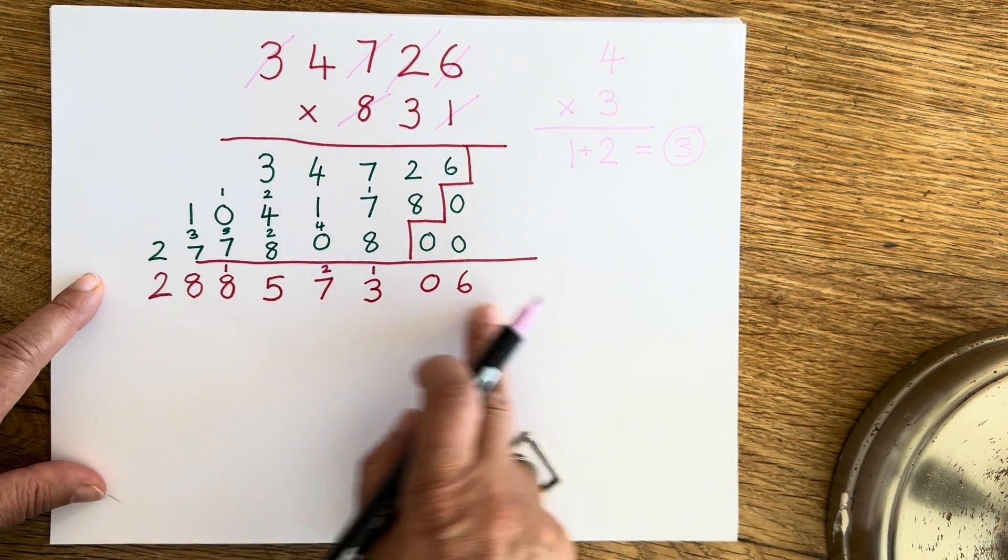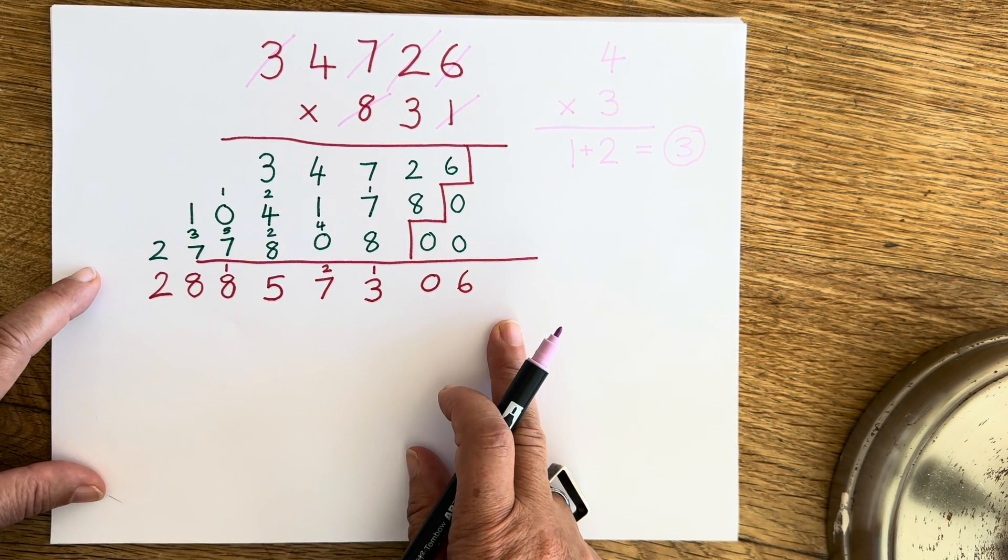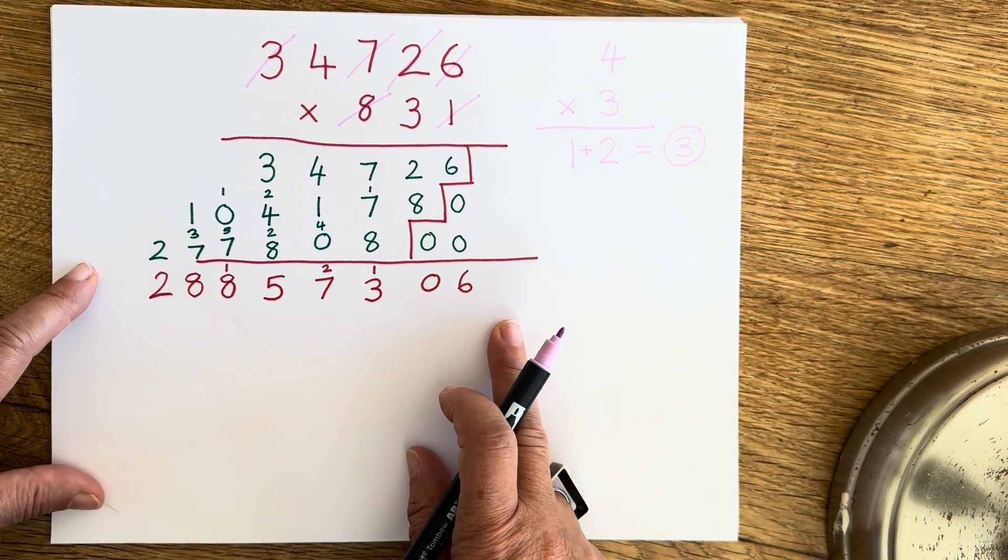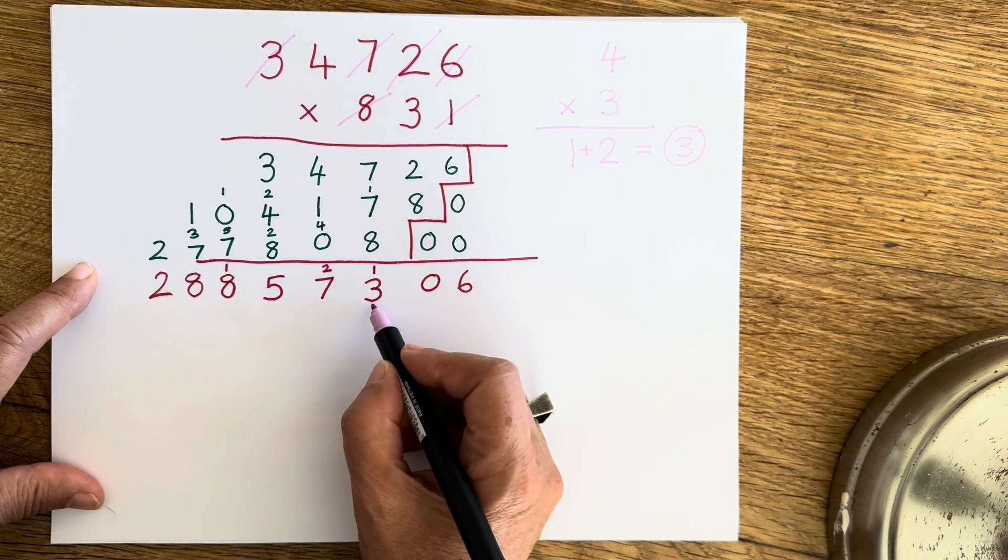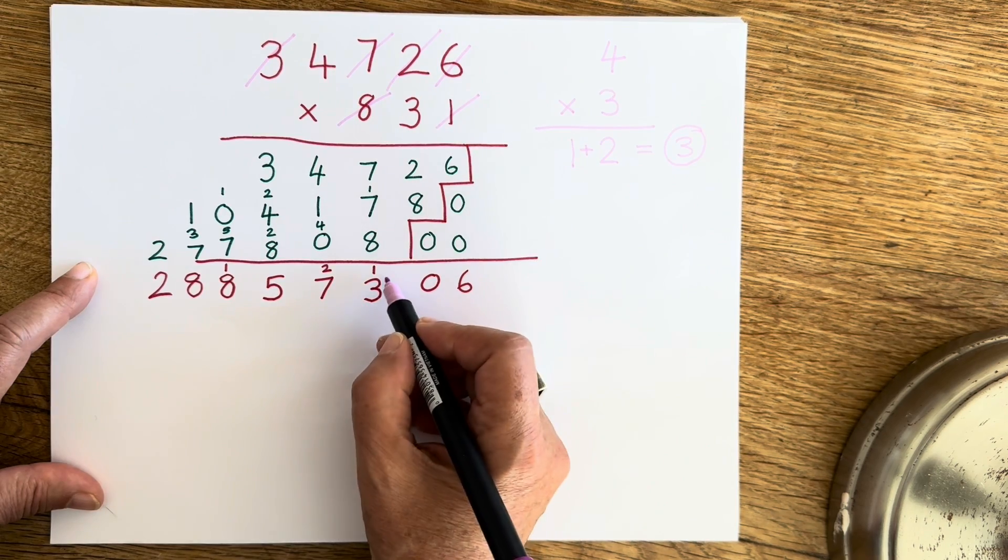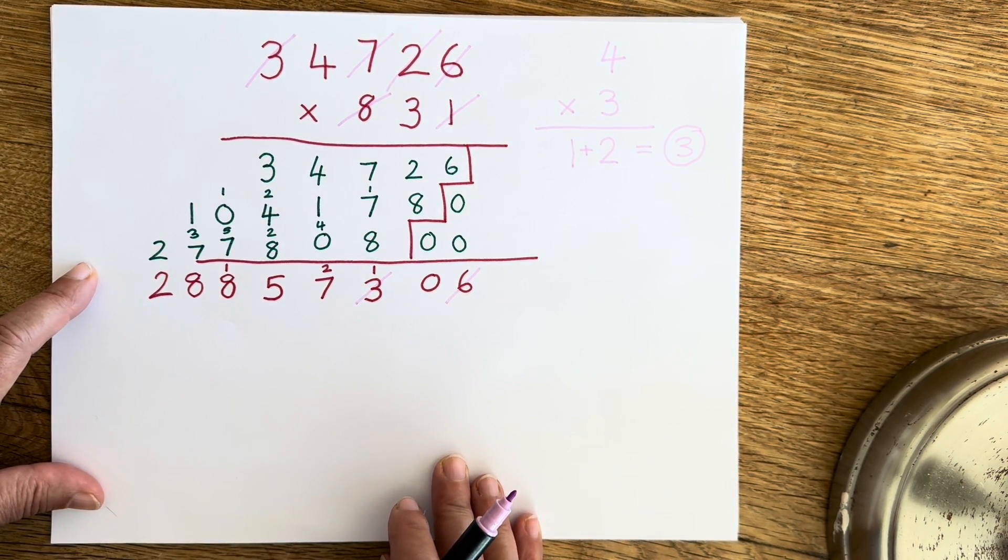So I'm going to do the same again with my answer. I'm going to have a look at it and I'm going to cast out any pairs of numbers that add up to nine. So the first thing I can see is a three and a six. Three plus six equals nine, so I can cast those out.